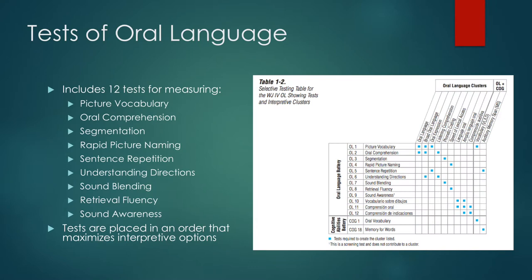Moving on to the test of oral language — this section includes 12 tests measuring: picture vocabulary, oral comprehension, segmentation, rapid picture naming, sentence repetition, understanding directions, sound blending, retrieval fluency, and sound awareness.